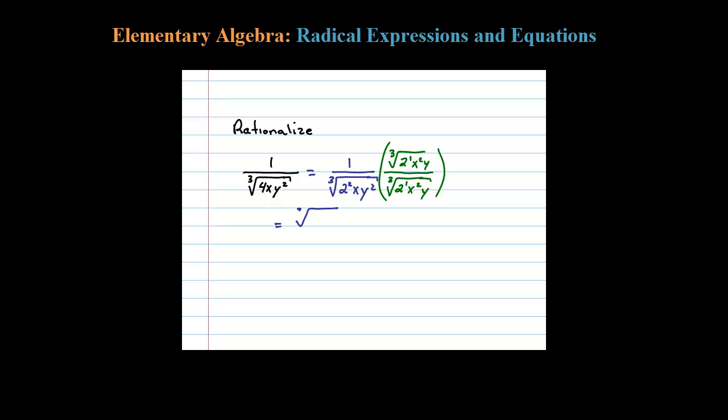Now in the denominator, when I multiply these together, you can see why I chose those powers. 2 squared times 2 is 2 to the third, x times x squared is x to the third, and y squared times y is y to the third.